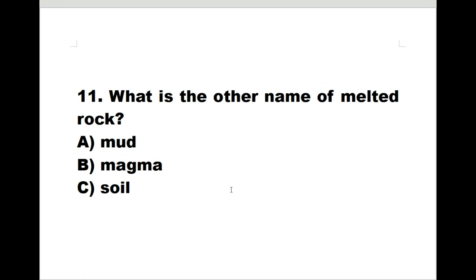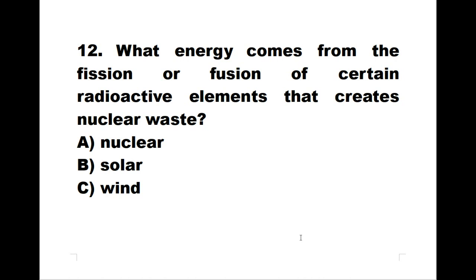Number eleven: what is the other name for melted rock? A: mud. B: magma. C: soil. The correct answer is B, magma. Number twelve: what energy comes from the fission or fusion of certain radioactive elements that creates nuclear waste? A: nuclear. B: solar. C: wind. The correct answer is A, nuclear.